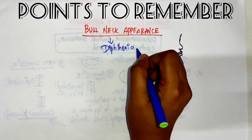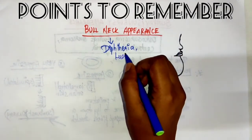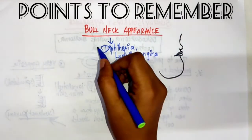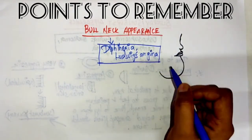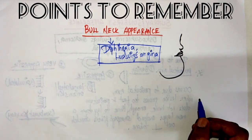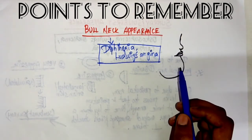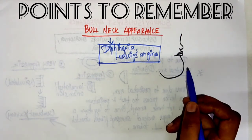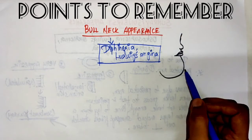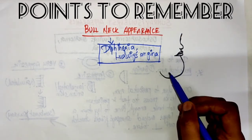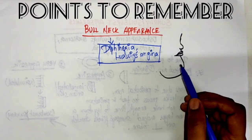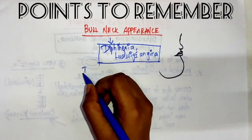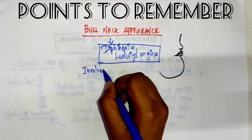It is also seen in Ludwig's angina. Now, what is this bull neck appearance? It resembles the neck of a bull — that is why it is known as the bull neck appearance. The neck will be enlarged, resembling the neck of a bull.